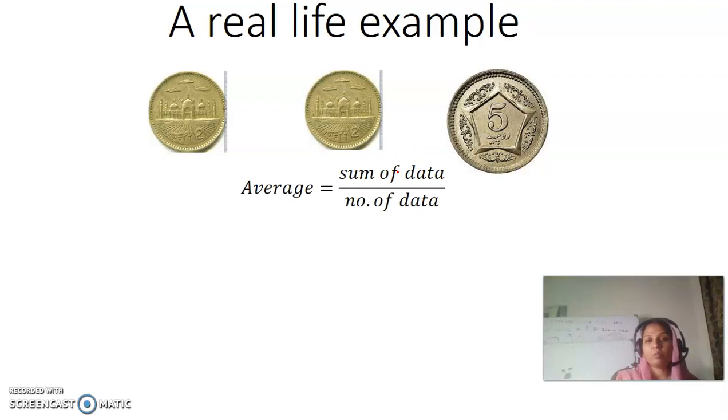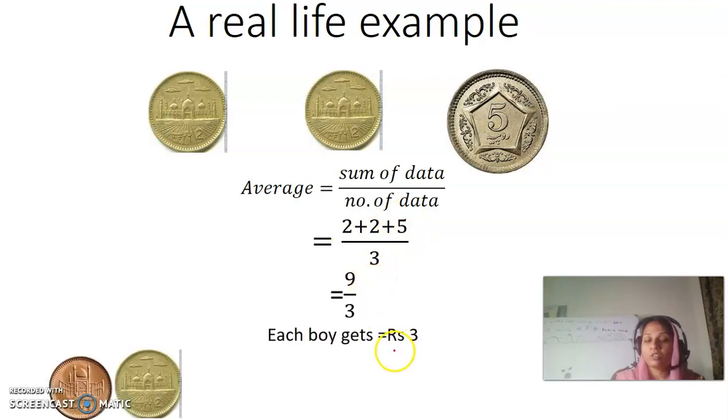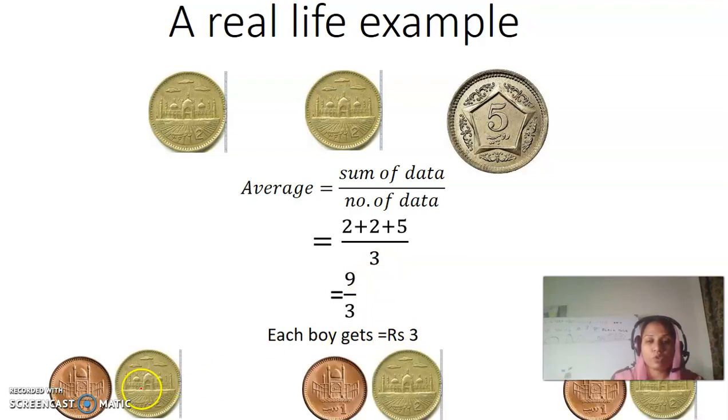Why don't we use the formula for average which is sum of data over number of data. For this, we will sum up all of the money value which is 2 plus 2 plus 5 over 3 and we get rupees 3. Each of the child is going to get 3 rupees, 3 rupees and 3 rupees each. This is the practical use of average that you can divide a sum of money equally among the children.